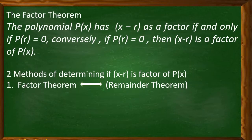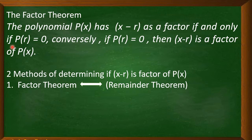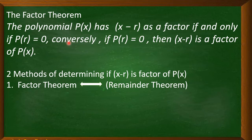Before we go further, let us first understand what the factor theorem is all about. The factor theorem states that the polynomial p of x has quantity x minus r as a factor if and only if p of r is equal to 0. Conversely, if p of r is equal to 0, then x minus r is a factor of p of x. We have here a condition wherein we can say that x minus r is a factor of p of x only when p of r is equal to 0.